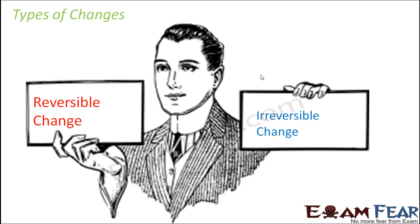Now when we talk about types of changes, at this level we will discuss two categories. Certain changes are reversible — that is, you can reverse them. You start with an initial substance, it undergoes a change, and you get something different. But it is also possible to get back the original substance from the changed substance.